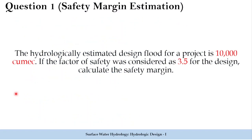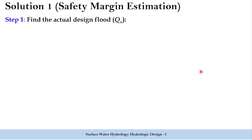The hydrologically estimated design flood for a project is 10,000 cubic meters per second. If the factor of safety was considered as 3.5 for the design, find the safety margin. The design flood QE is 10,000 cubic meters per second and the factor of safety FS is 3.5.